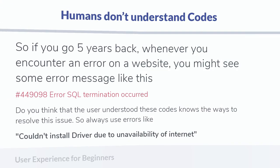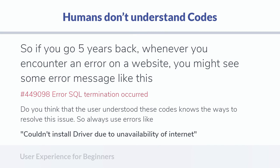For example, if you go five years back, whenever you encountered any error on a website, you might see something like 'hash code 449098 error, SQL termination occurred.' You never understood what that error was. If you can't understand the error, how can you fix it? This is a very broad problem — if you can't understand what happened, you can't fix it at all.